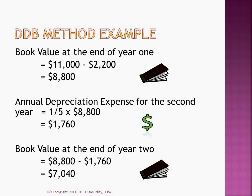To calculate depreciation expense for the second full year, we again multiply the double declining balance rate by the beginning-of-period book value — 1/5th, or 20%, by $8,800 in this case. The depreciation expense for the second year is then $1,760 and the book value at the end of the second year is $7,040. Note that book value can be calculated by deducting current period depreciation expense from the beginning-of-period book value, which is the same result as deducting accumulated depreciation from historical cost.